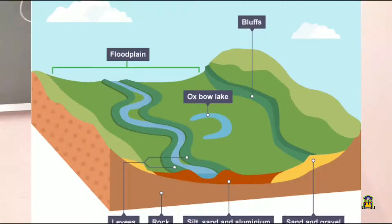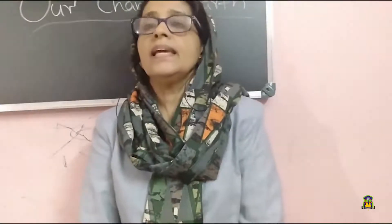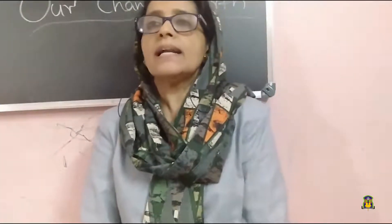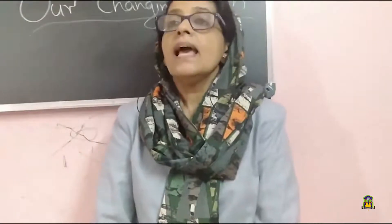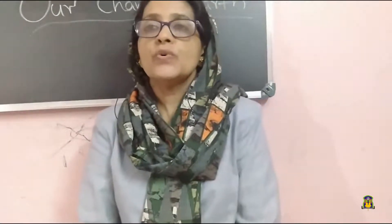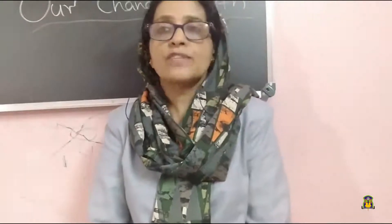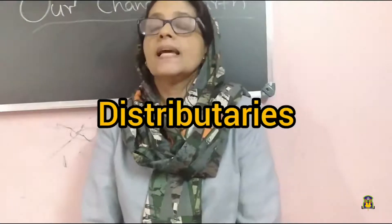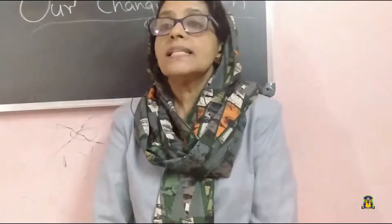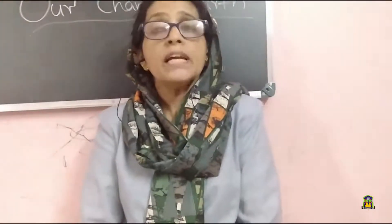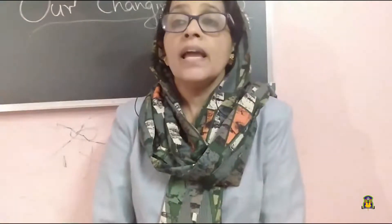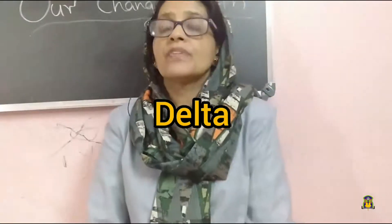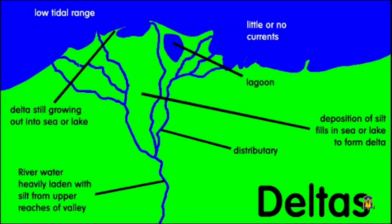As the river approaches the sea, the speed of the flowing water decreases and the river begins to break up into a number of streams called distributaries. The collection of sediments from all the river mouths forms a delta.